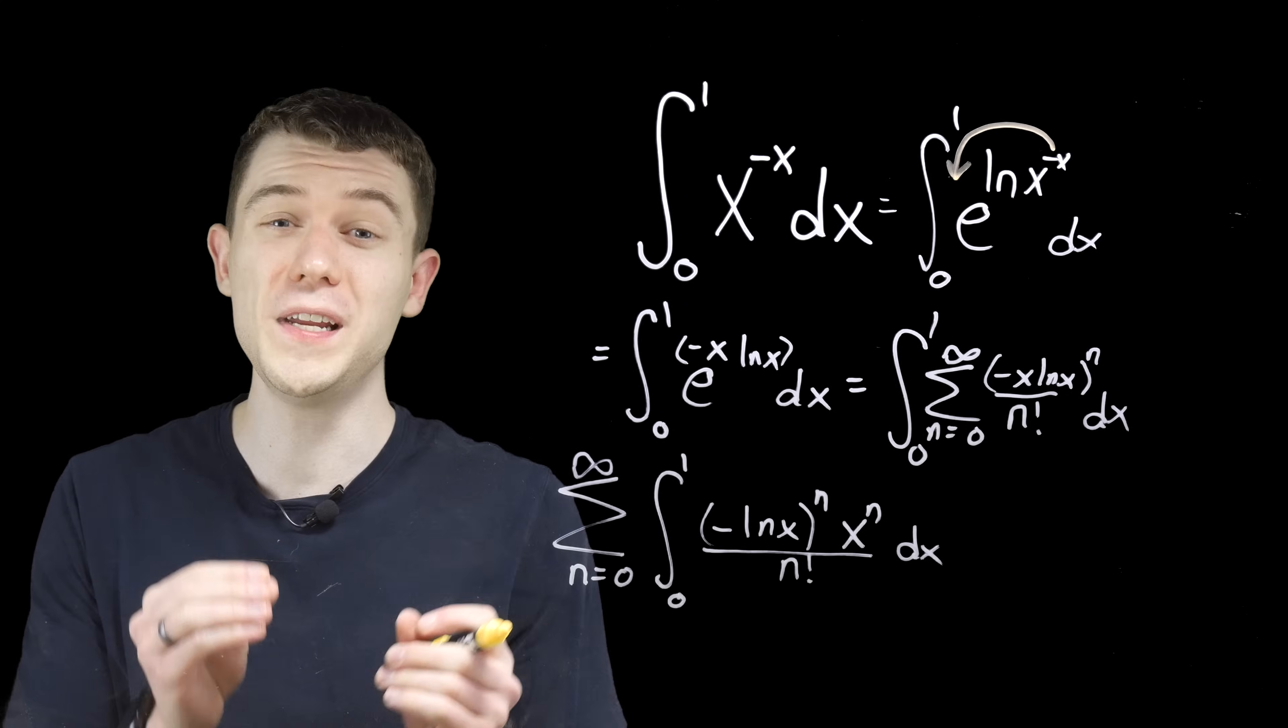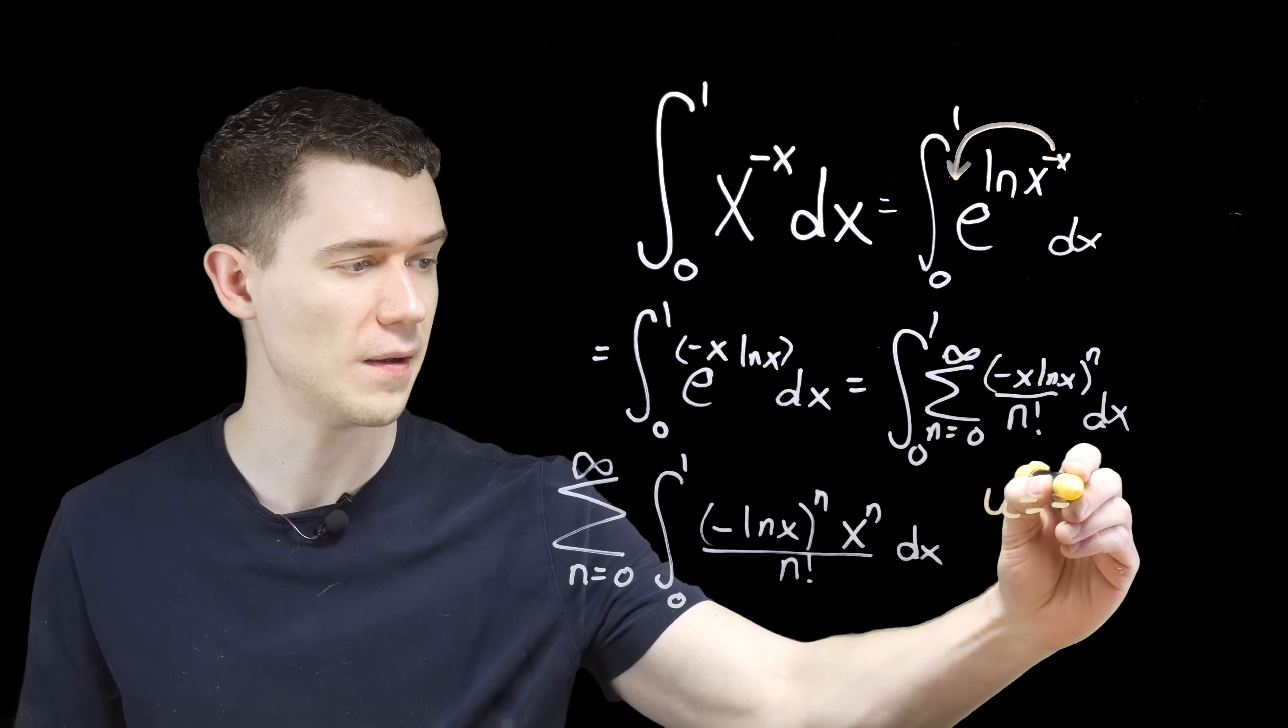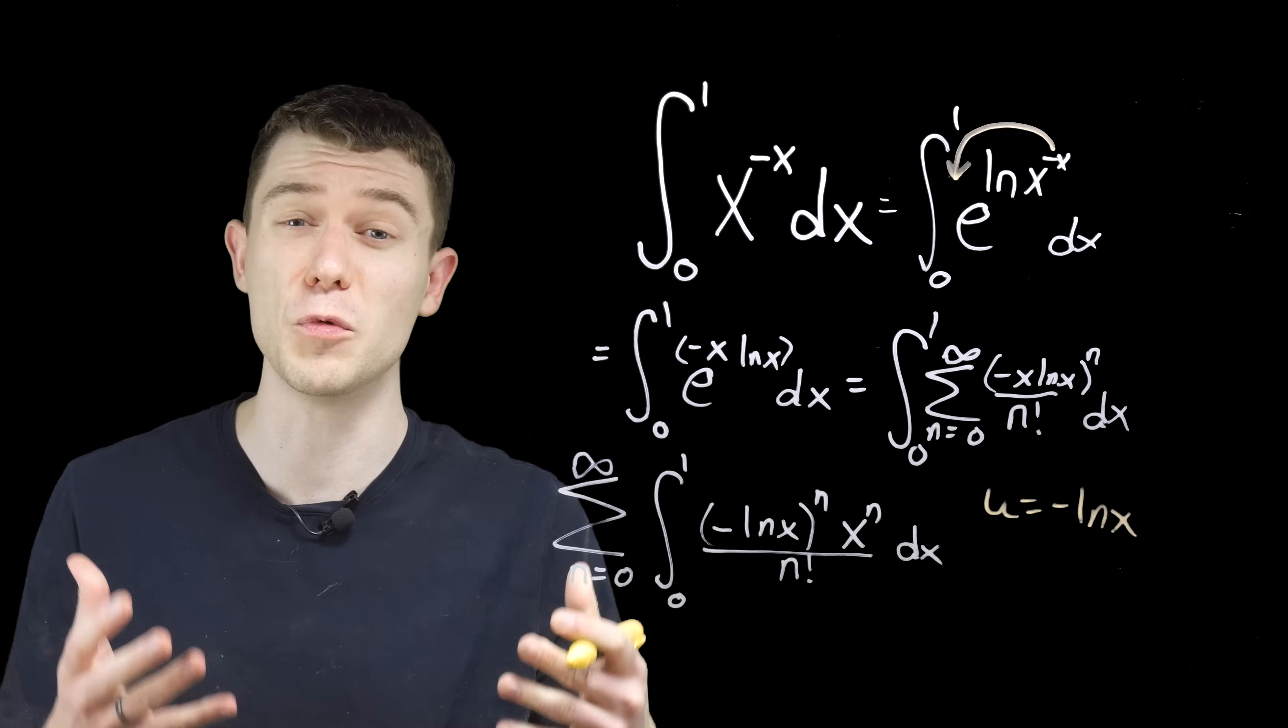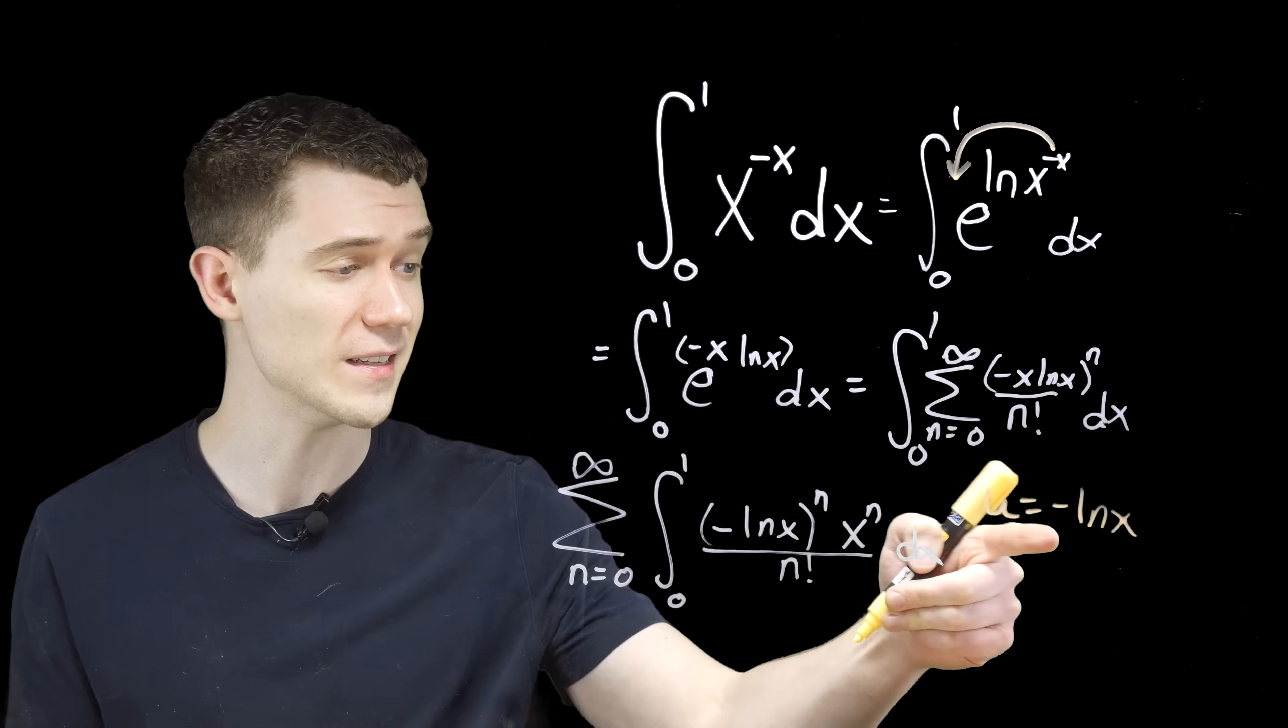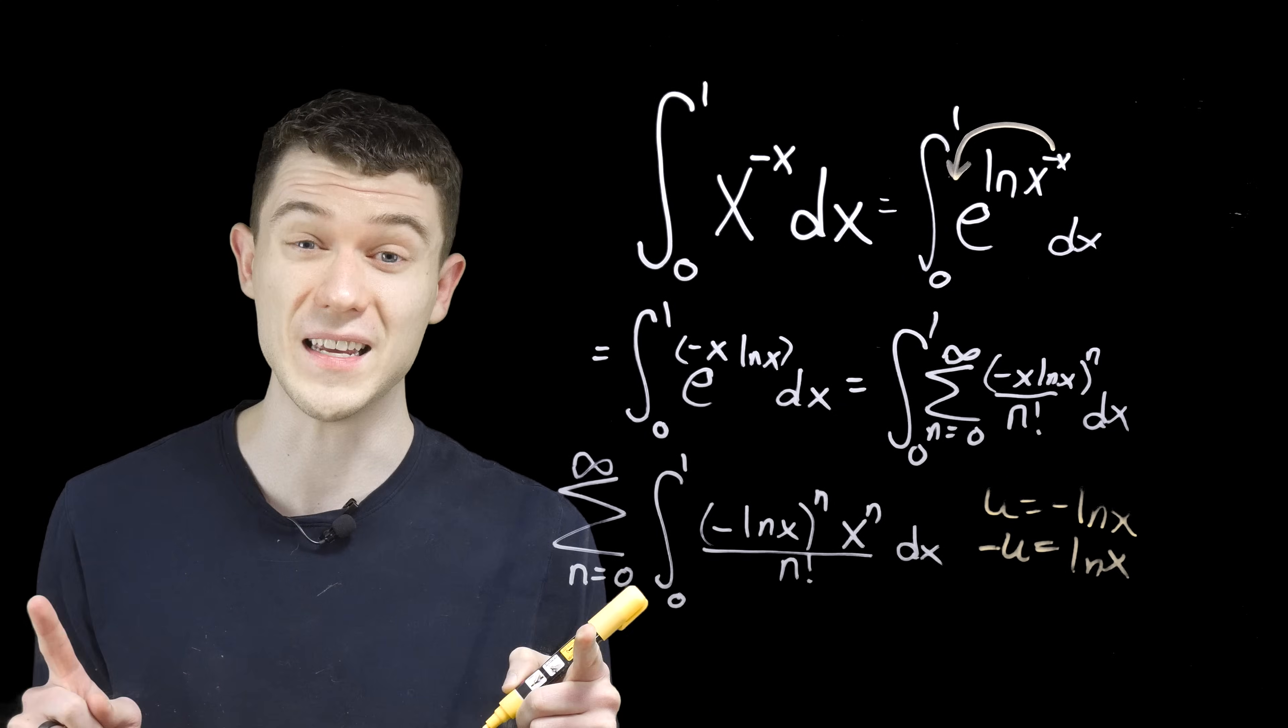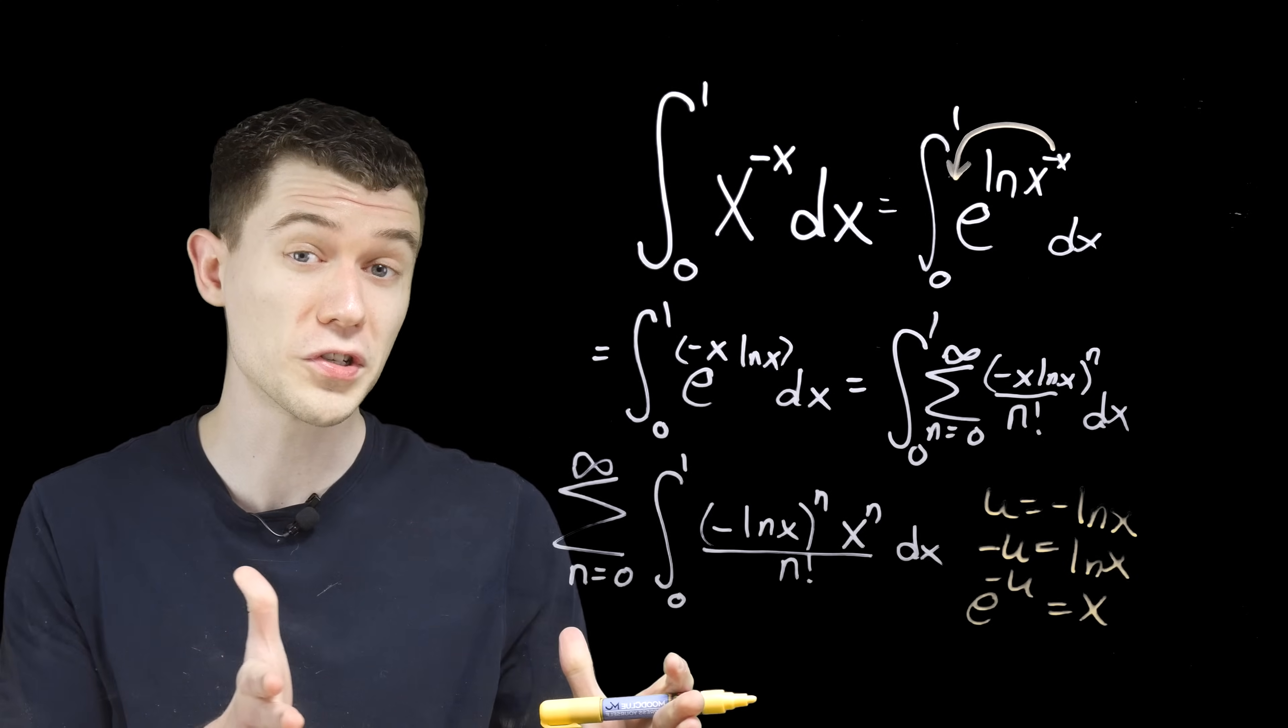And at this point, we need to rely on some substitutions. Here's the substitution we'll use. Let's let u be minus ln x. And notice that we would take care of this term, the minus ln x. That would become u. But we still have an x to the n left over. Let's figure out what x is. Take the negative of both sides here, so that minus u equals ln x, or taking the e of both sides, we would have that e to the minus u, that's x.